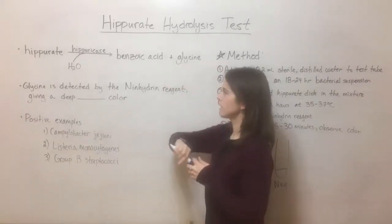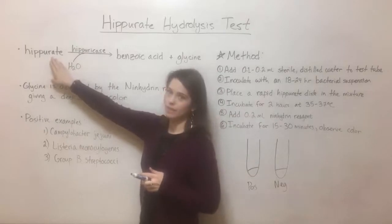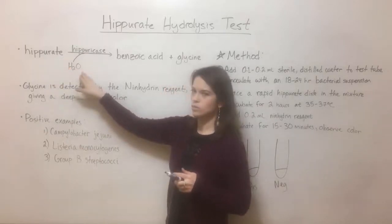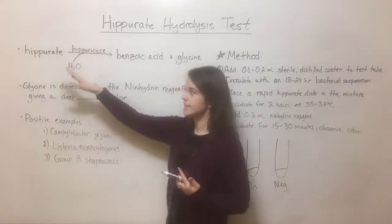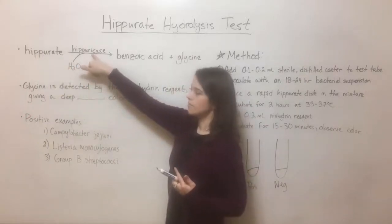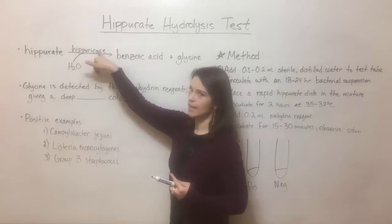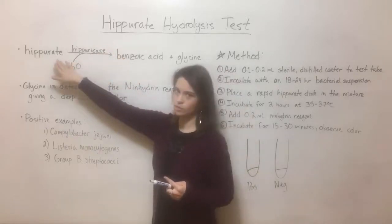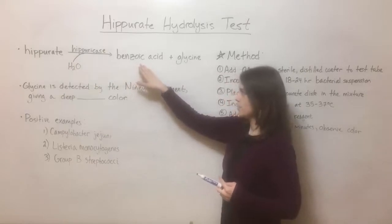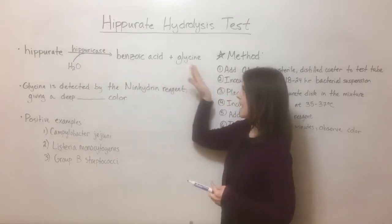And in this test in particular, hippurate is able to be hydrolyzed, that means using water to break bonds. So hippurate is able to be broken down by water if an enzyme called hippuricase is present. And so if hippuricase is present, it uses water to break down hippurate to make the products benzoic acid and glycine.